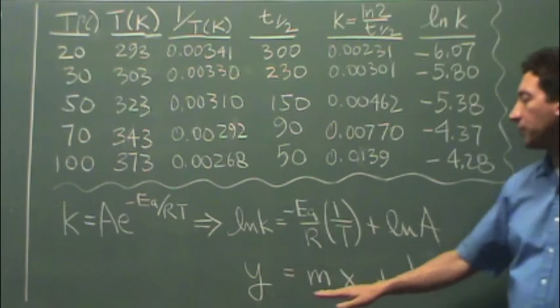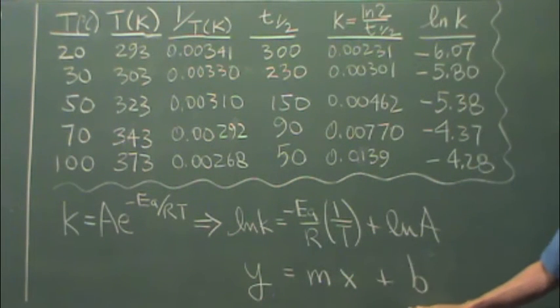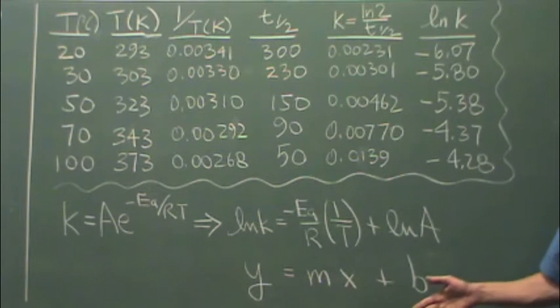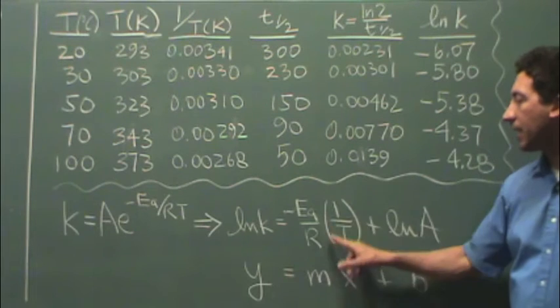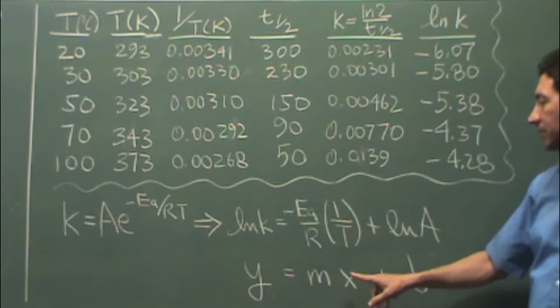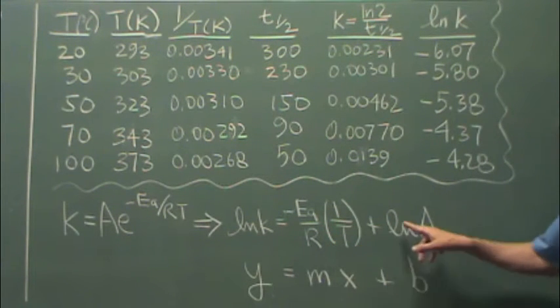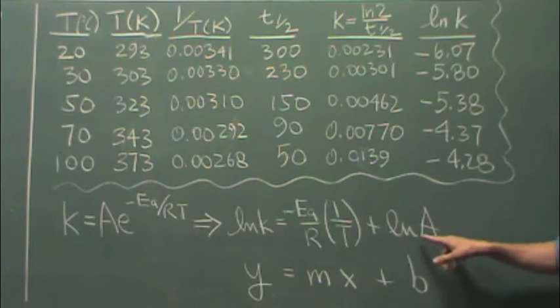This form is helpful because it's in the form of a line, which we can plot, and we're going to do that in just a minute. So you can see we have y equals mx plus b, m is how we're going to find the activation energy, x is one over T, and then the y intercept, b, is natural log of A.